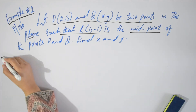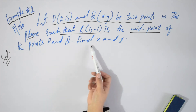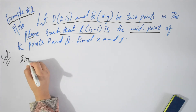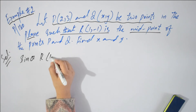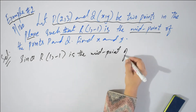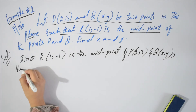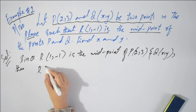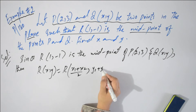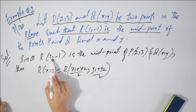I am doing the same in the solution. Students, you can write given and required — in given you have these points and in required you have to find the value of x and y. In solution, I am writing: since R of 1 comma minus 1 is the midpoint of P of 2 comma 3 and Q of x comma y, then apply midpoint formula. Midpoint formula is: R of (x, y) equals R of (x1 plus x2 upon 2, y1 plus y2 upon 2).